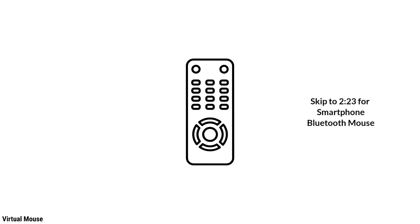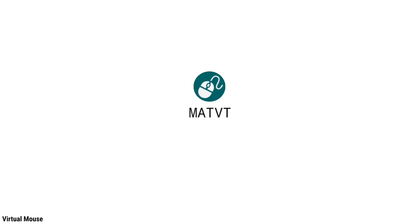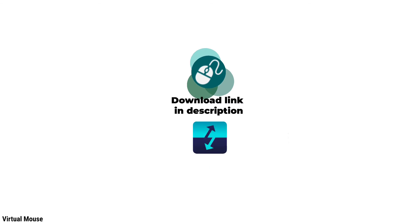To get a virtual mouse controllable with your TV's remote, you will need to install an app called MATVT. This app allows you to toggle mouse mode on your TV and control the cursor with your TV's remote. To install the app, download it from the link in the description, and send it to your TV using the Send Files To TV app. Open and install it with the file manager.